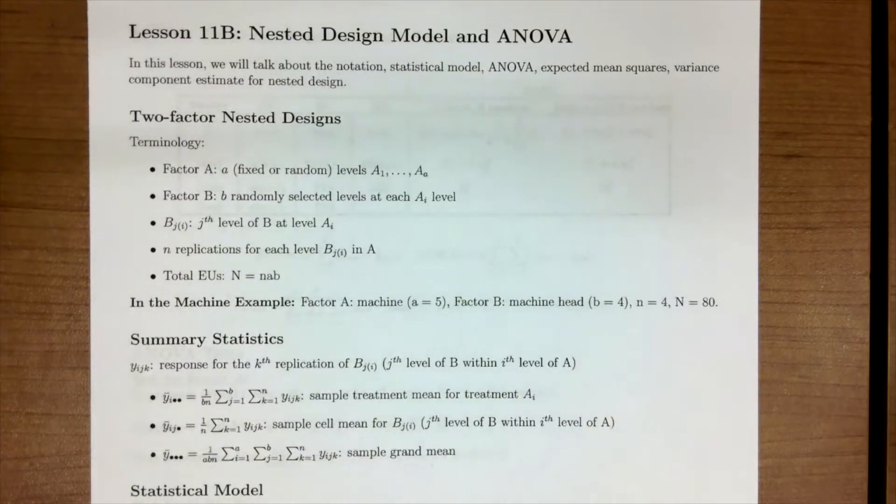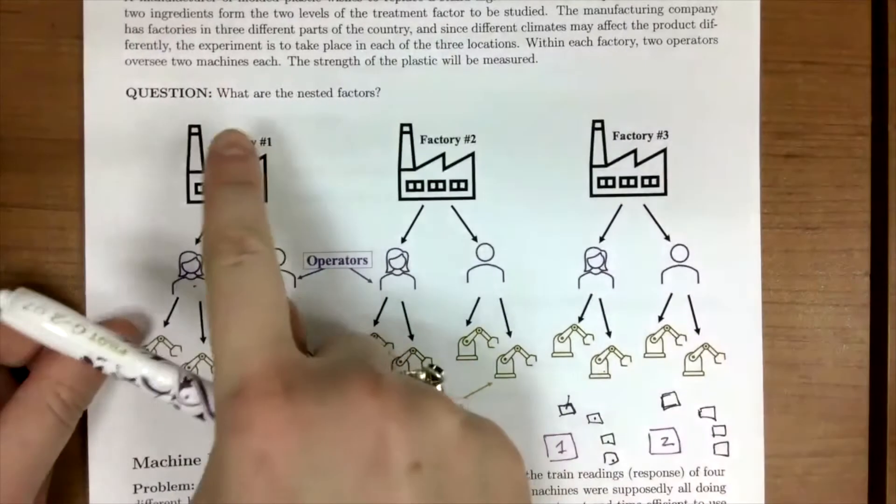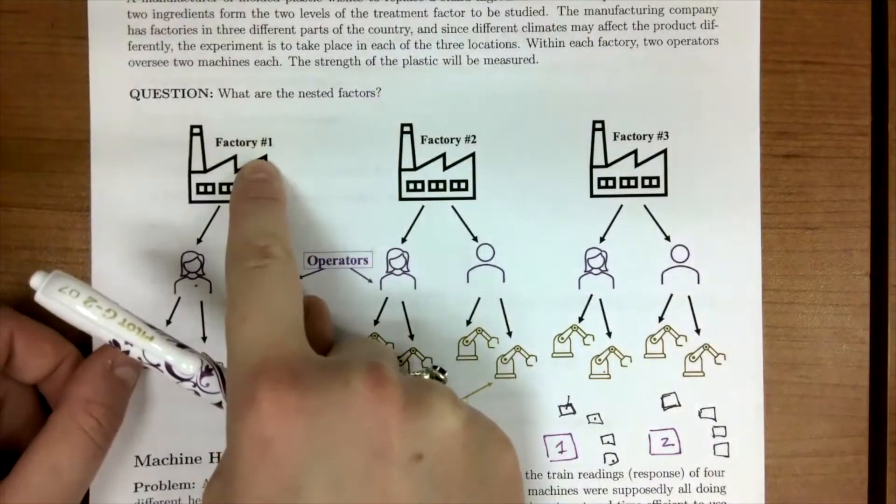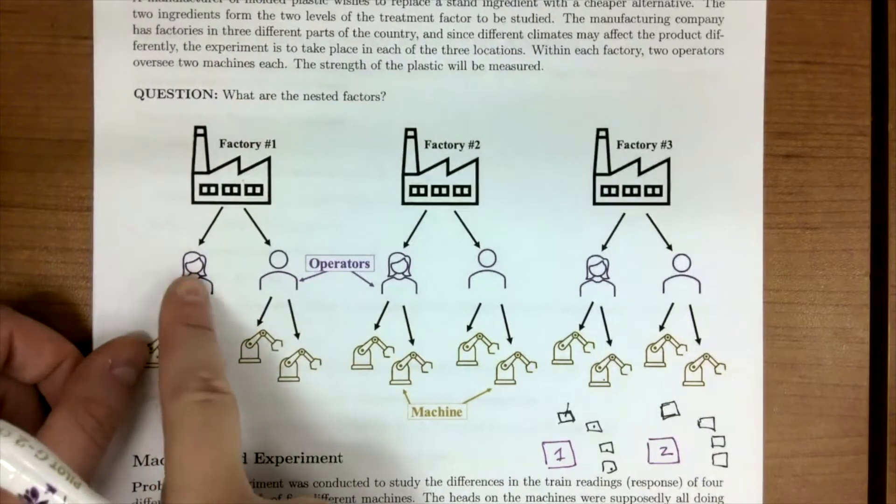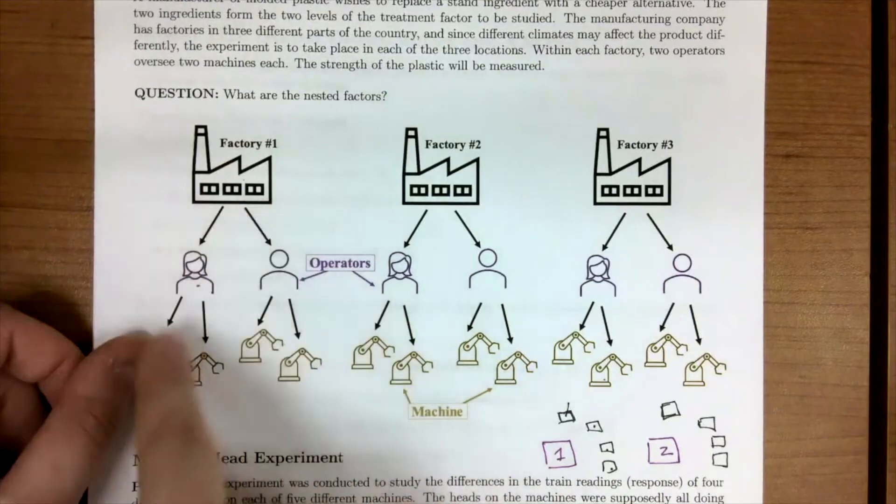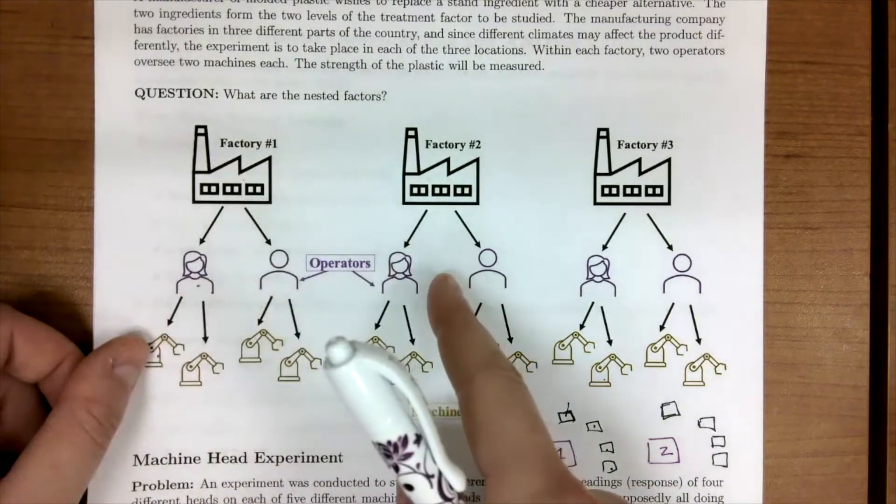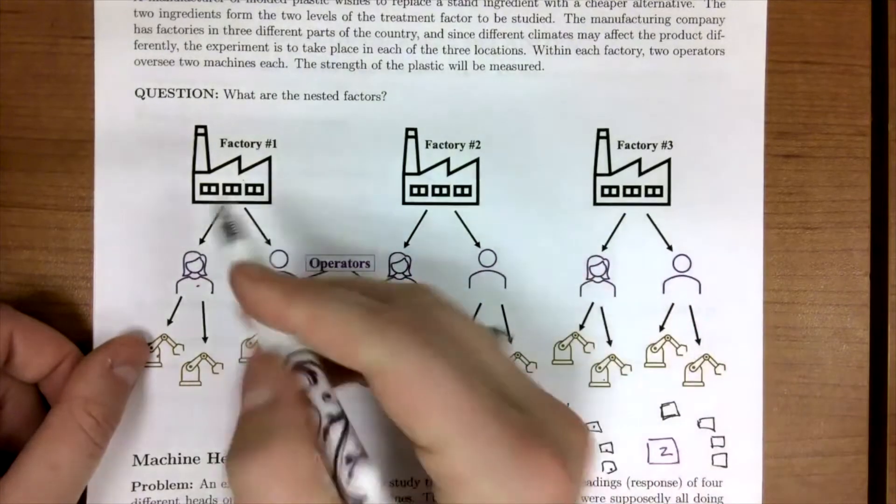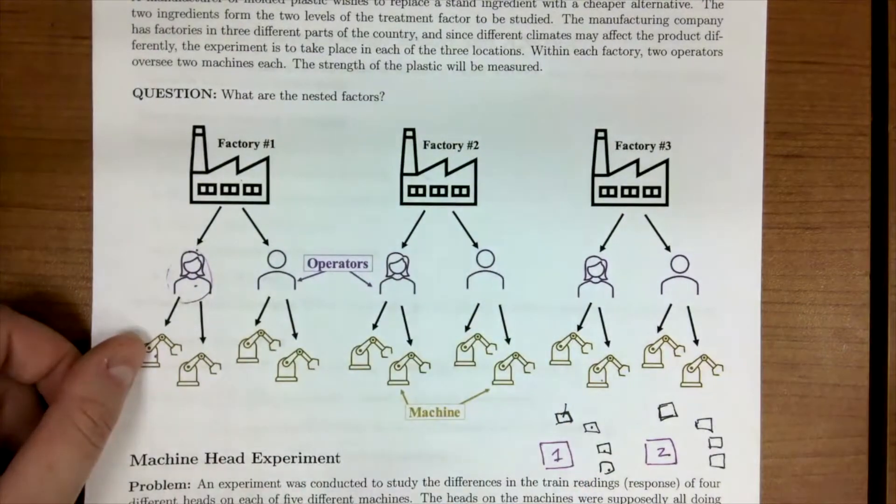Now recall in lesson 11a, we talked about how a nested design has a hierarchy of factors. So in the plastic example, we had factory one, and then we had our operators, where this operator is only operating in this factory. They aren't coming over to factory two or three, so this one person is only in factory one. This is what's going to make it nested.